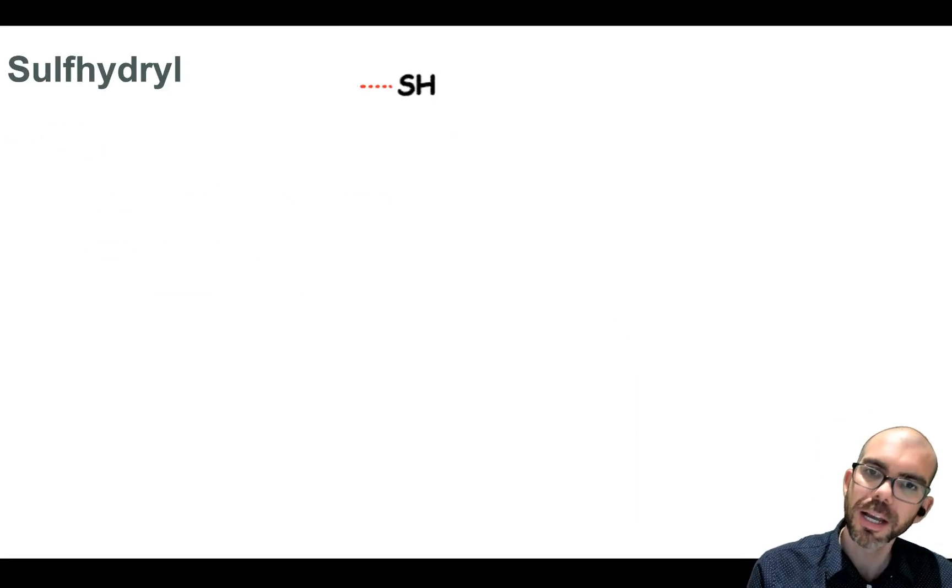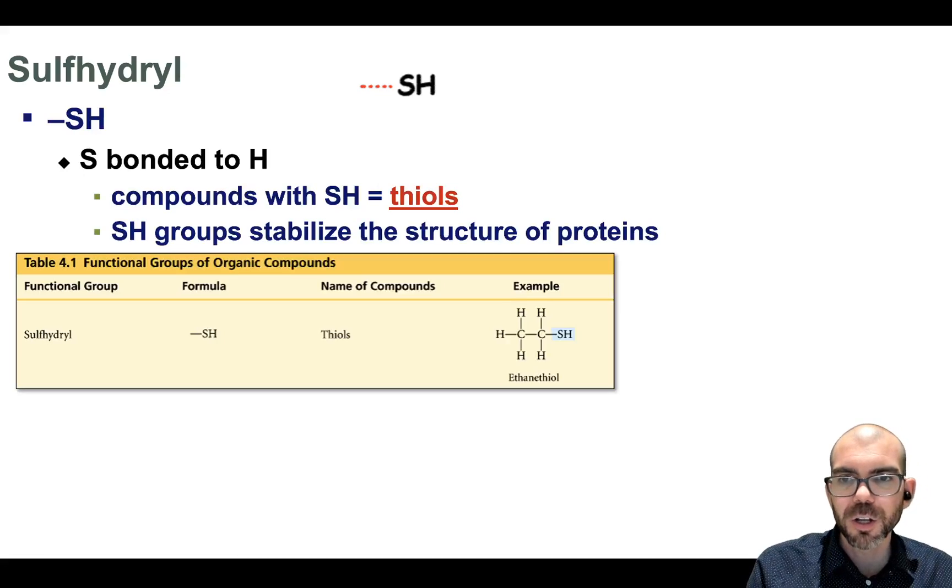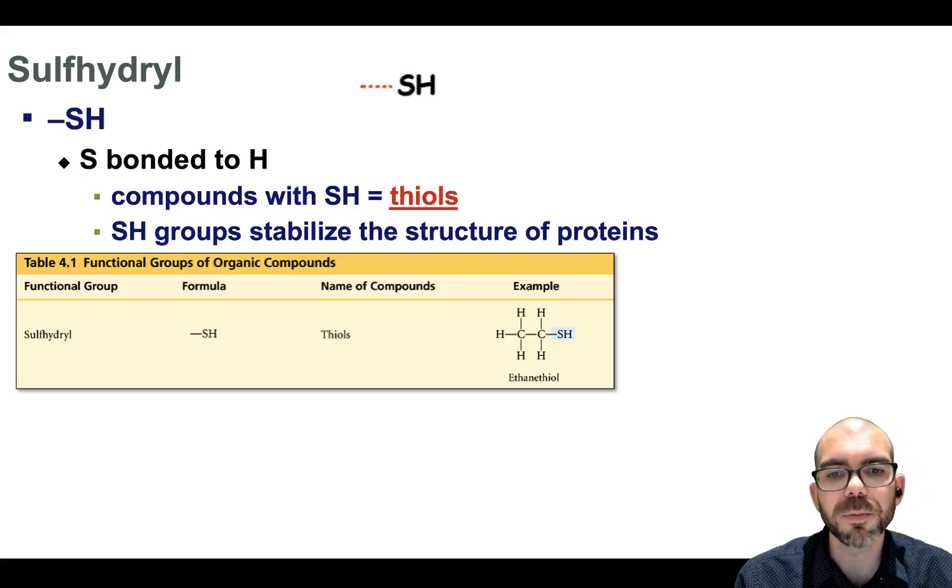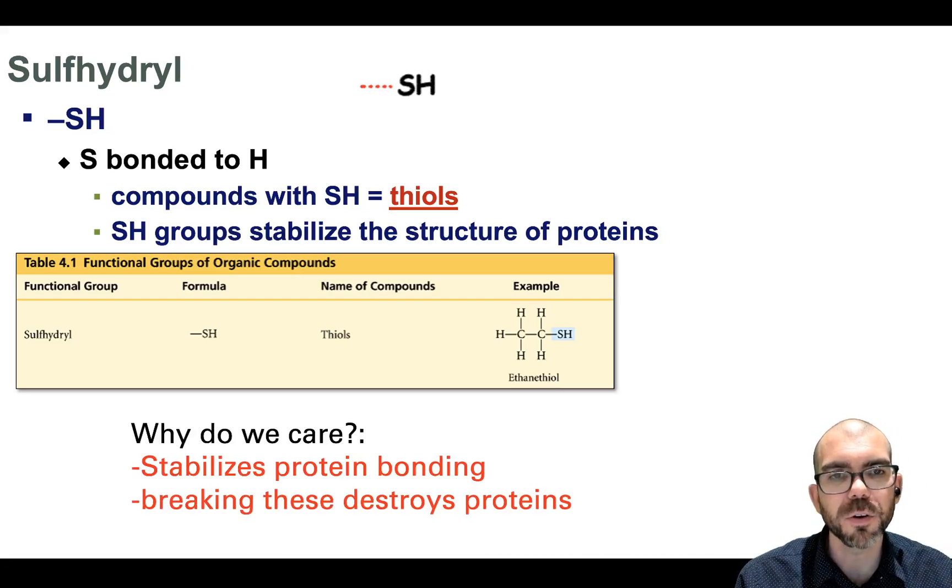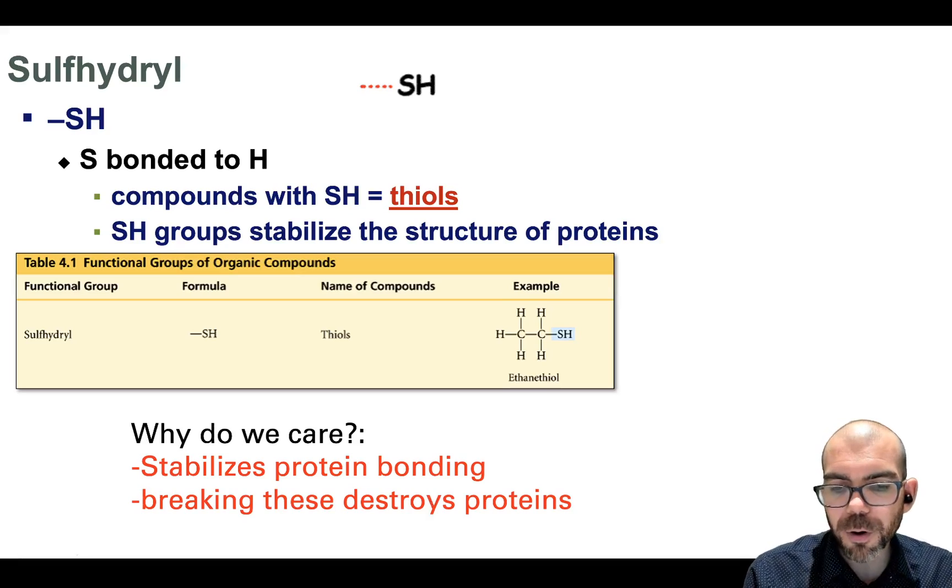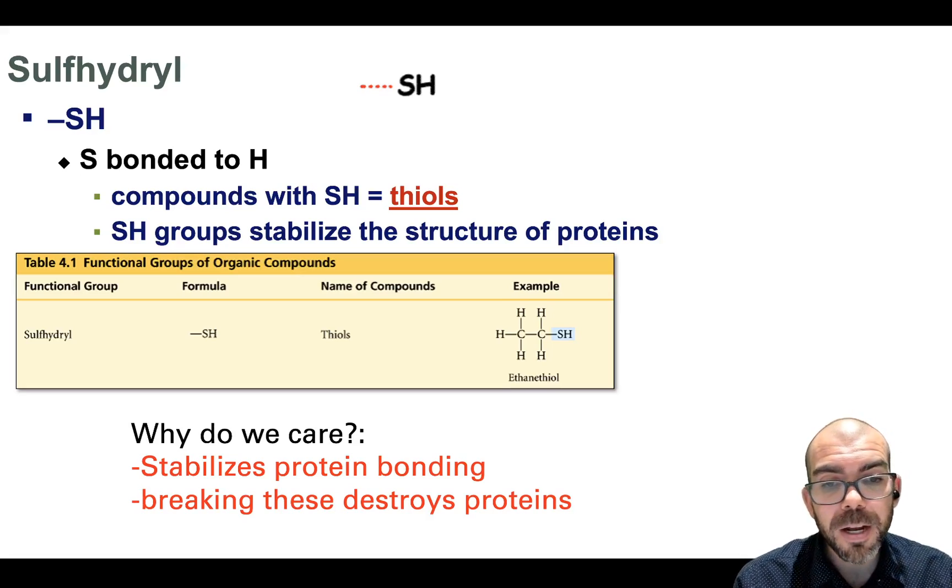Sulfhydryl is next. That is the SH group. Sulfhydryl is just a sulfur bonded with a hydrogen. Compounds that end with SH are thiols. You won't see them that often in this class. For our purposes, the big thing you want to know about the sulfhydryl group is it stabilizes protein bonding. That's the only time we'll deal with sulfur. Proteins fold in a complex variety of ways, and it is the sulfur that helps stabilize them. So conversely, if I were to destroy sulfur in a thing, that would destroy the protein's ability to bond together.